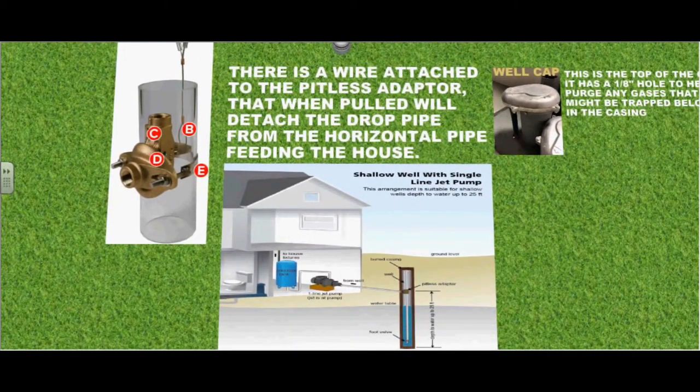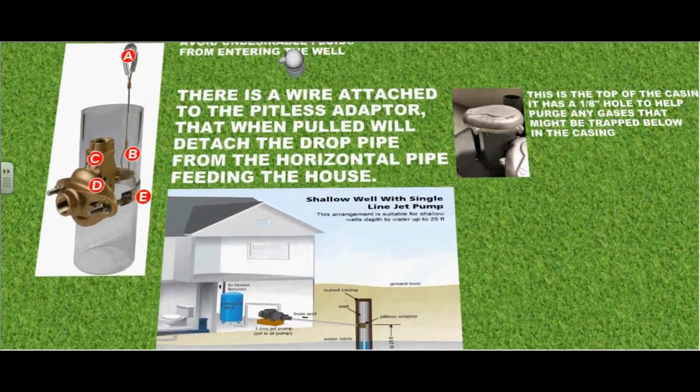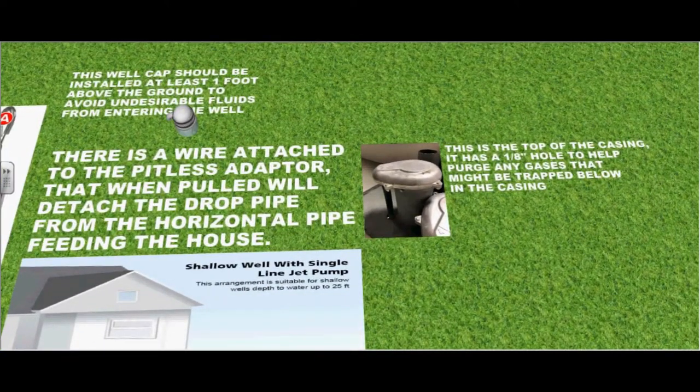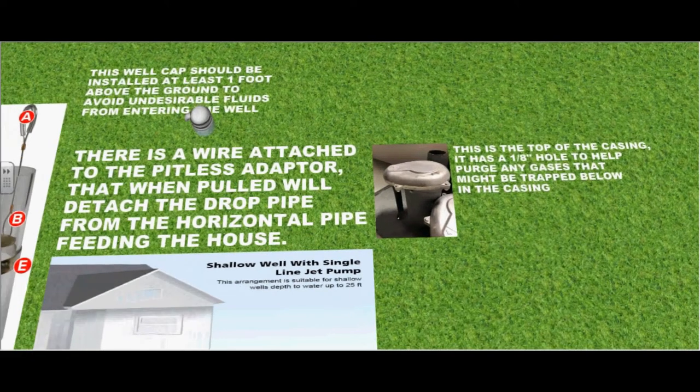This is the top of the casing. It has a 1 1/8 inch hole to help purge any gases that might be trapped below in the well casing.